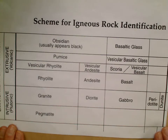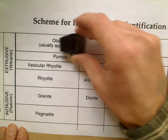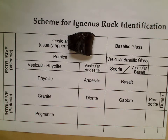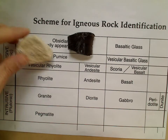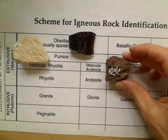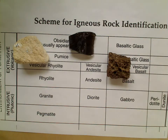This is the reference table for igneous rocks and these are the names of them. I'm going to start placing the rocks right next to their names. That's obsidian, and this is pumice right there. I have some scoria right here — you can really see the vesicles quite well.